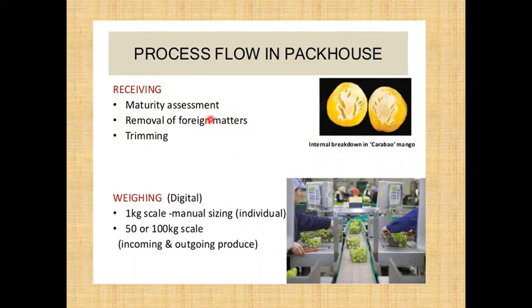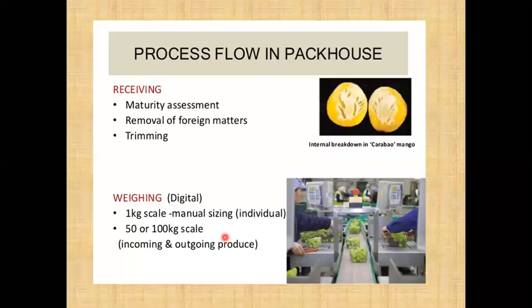At the receiving section, for maturity checking we prefer the specific gravity method. In that method we are dipping our commodity in a liquid, and when it sinks into that liquid we say it is properly matured. If it does not sink — if it floats on the surface of that liquid — then we say it is immature and we can discard that commodity. On the basis of specific gravity checking we decide maturity. Then for weighing, a digital weighing balance is used for incoming and outgoing produce.